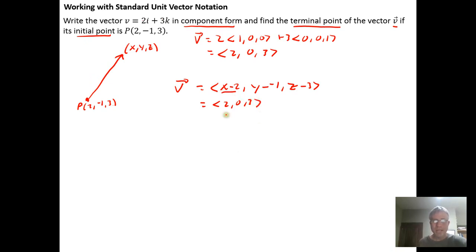So what that tells us is that x minus 2 has to equal 2. It tells us that y minus negative 1, which is y plus 1, has to equal 0. And z minus 3 has to give us the z component of 3.